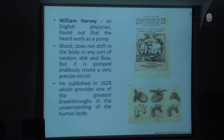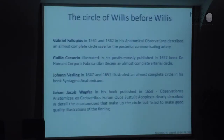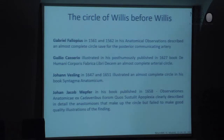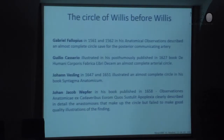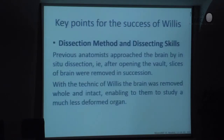Regarding the Circle of Willis, Willis was not the first to investigate this part of the cerebral circulation. There are many scientists like Gabriel Fallopius, Julius Caesario, Johann Vesling, and Johann Wepfer who made studies in this direction, but none of them could describe the whole circle, none could make a reasonable proposition about its function, and none made a really viable and good illustration of it. So Willis was the first to do all of this in one single scientific work.